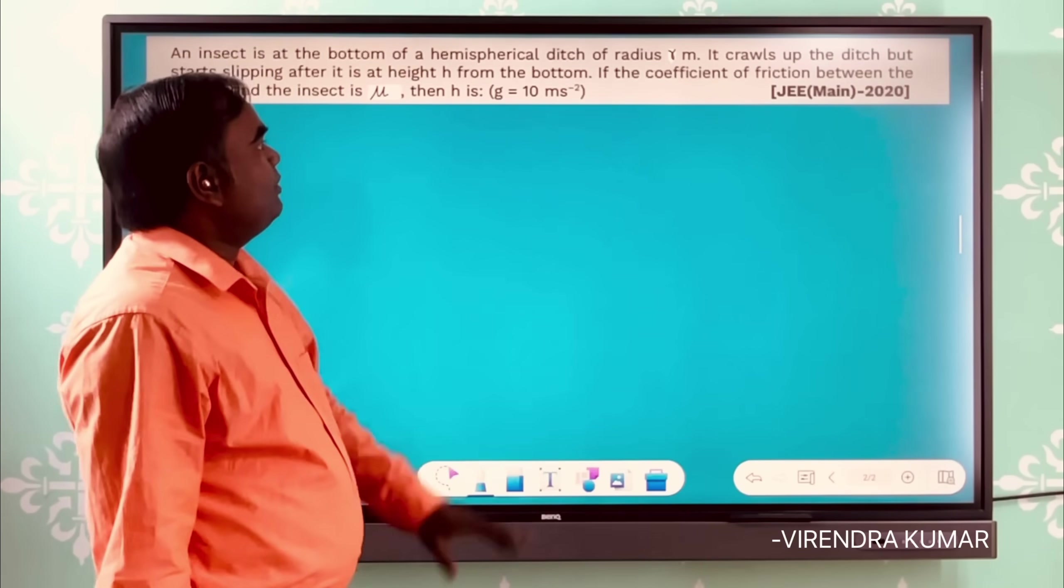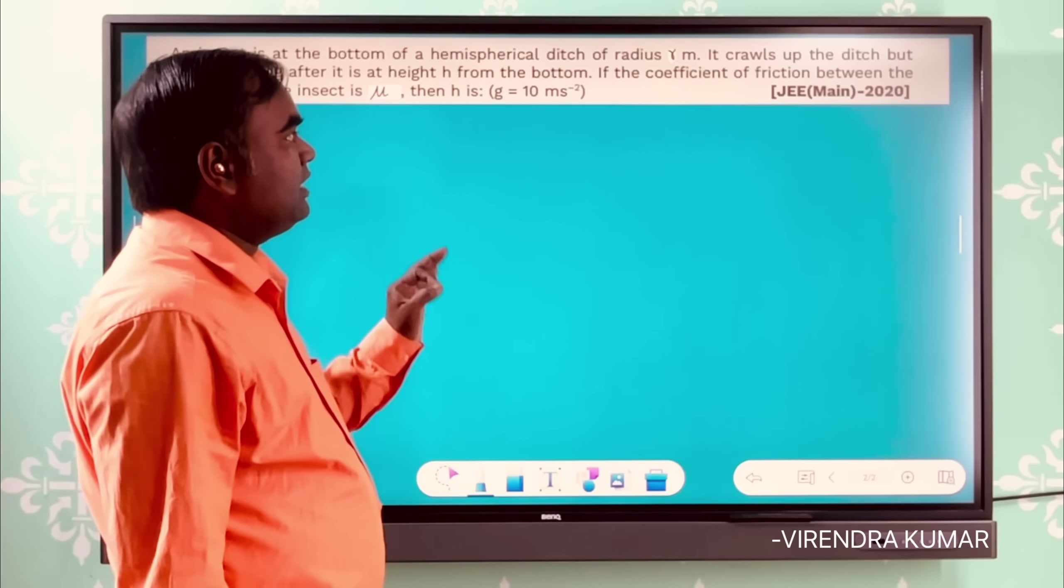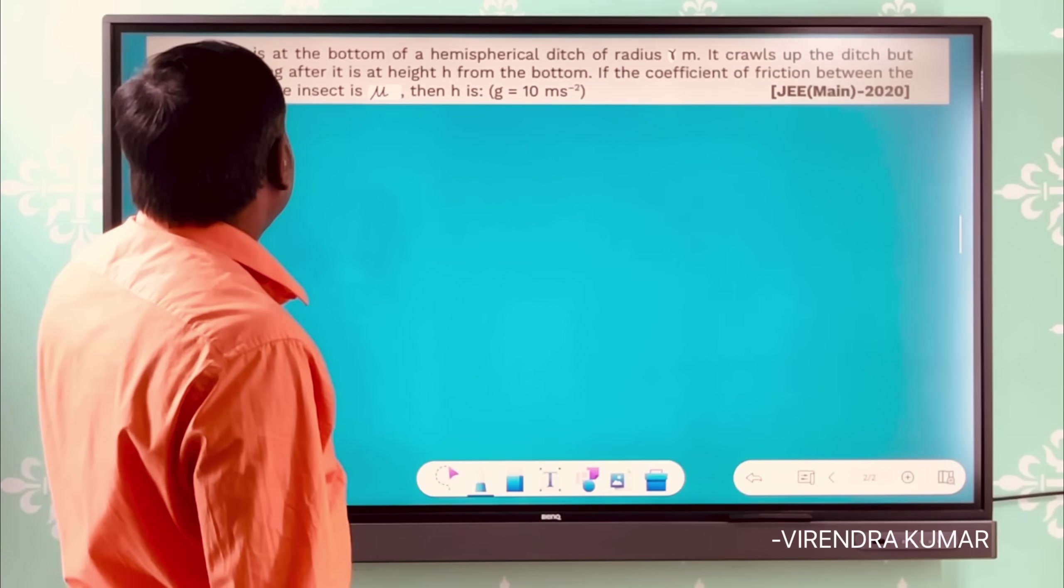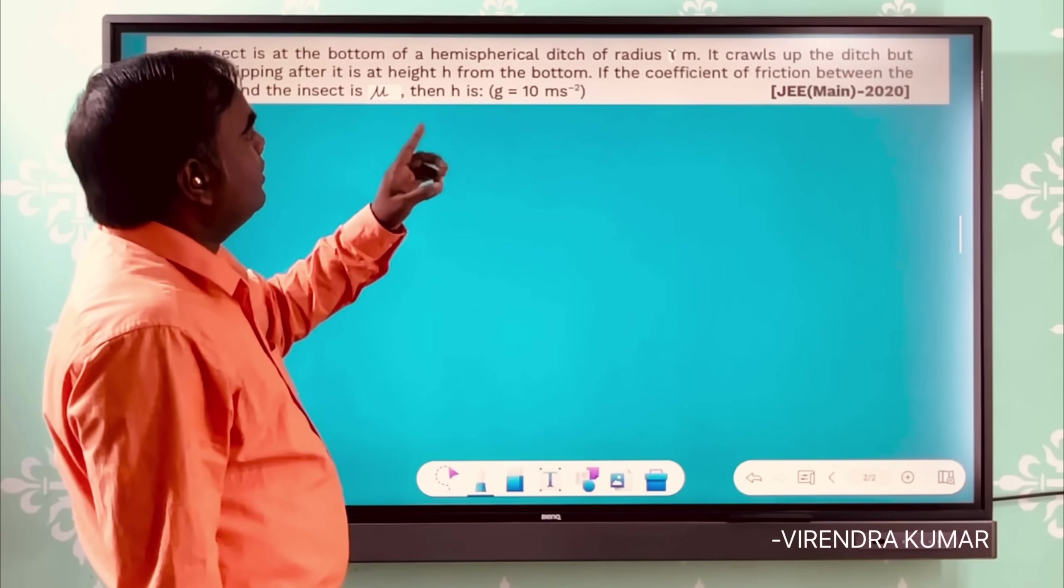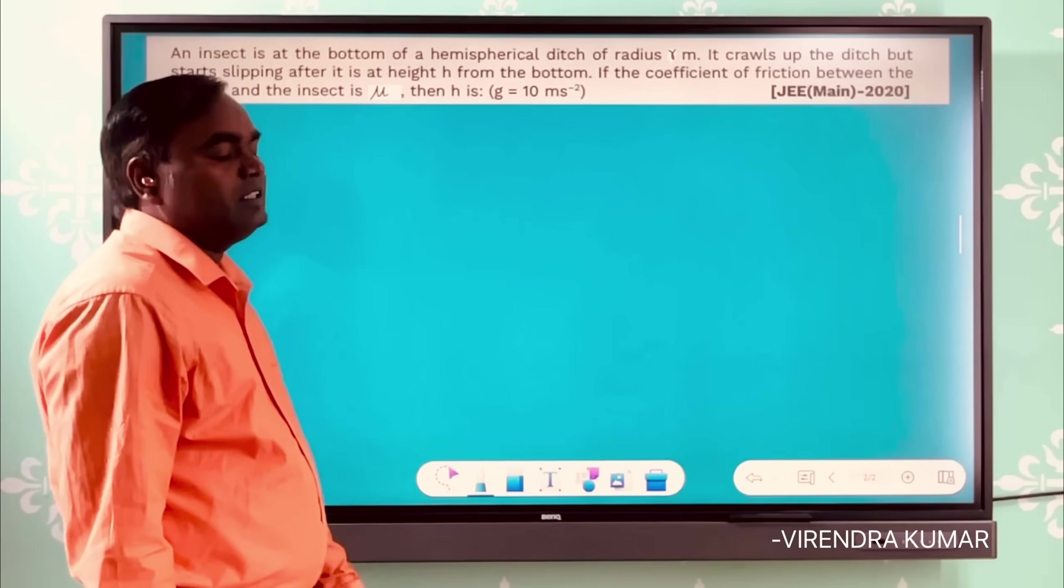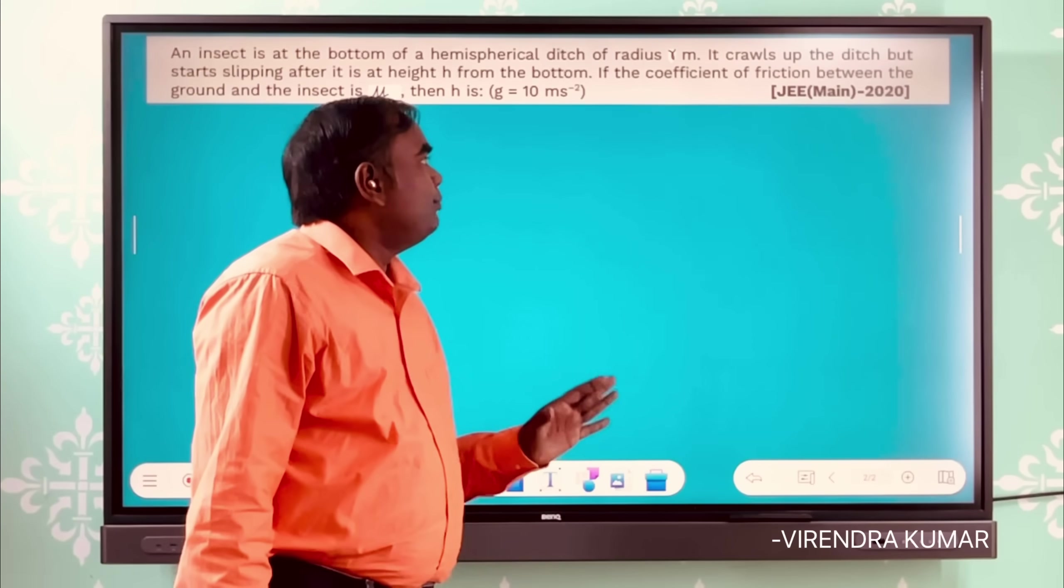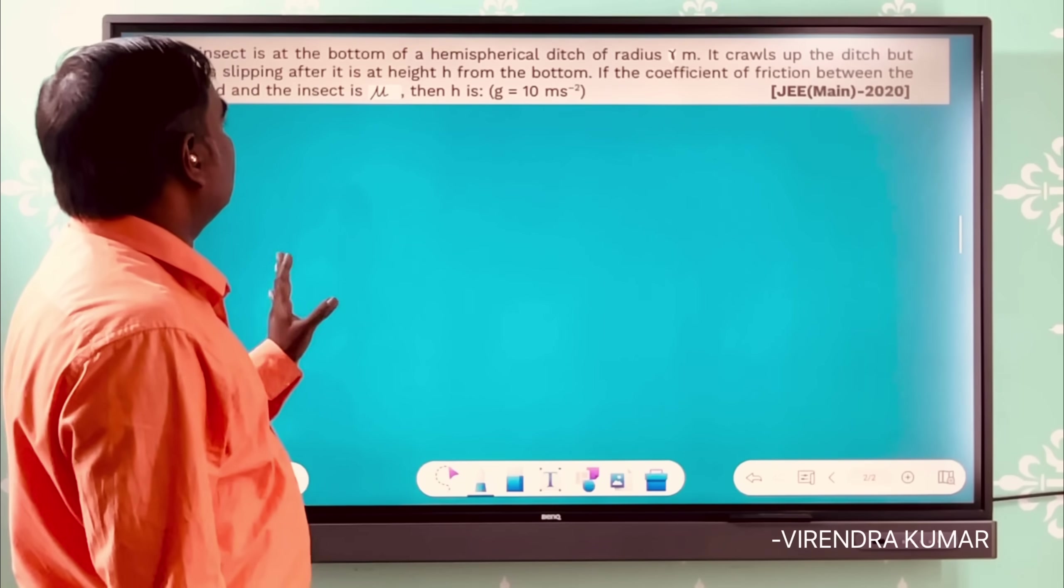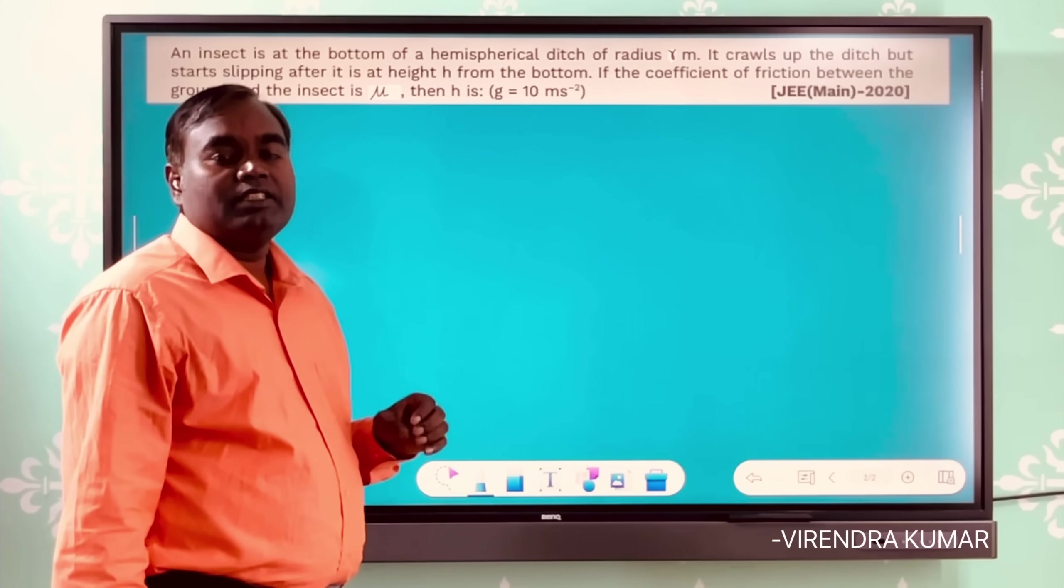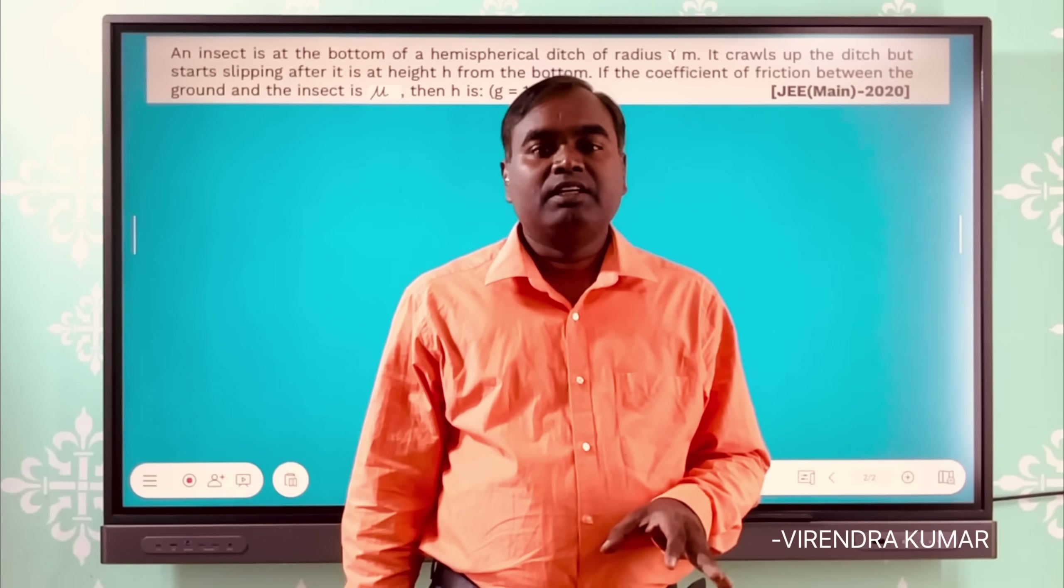The problem involves a hemispherical ditch of radius r centimeters. When the insect crawls up the ditch, it starts slipping after it is at height h from the bottom. If the coefficient of friction between the ground and the insect is μ, then find h in terms of radius of the hemisphere and the coefficient of friction.